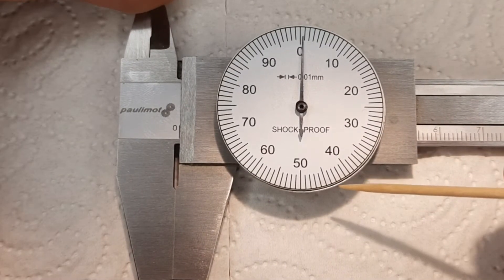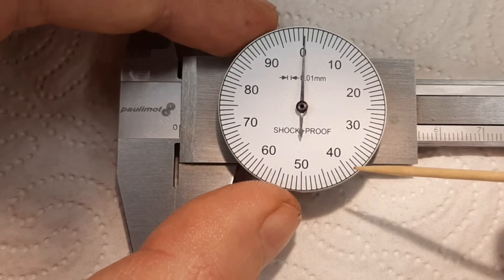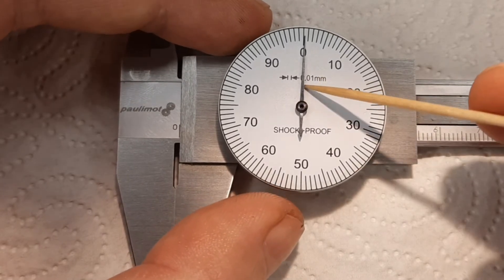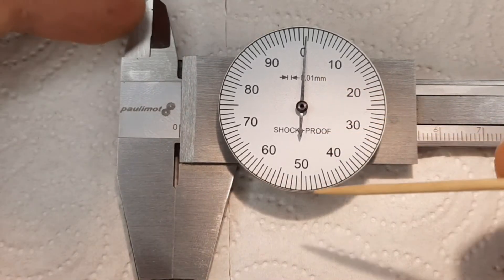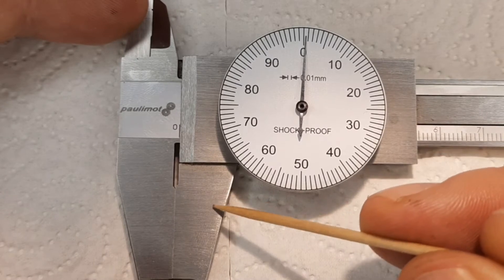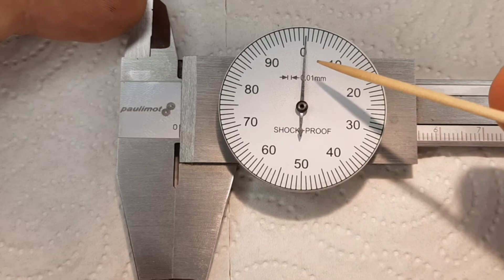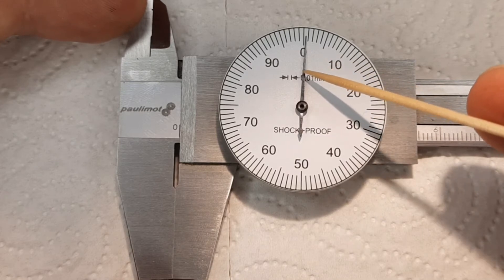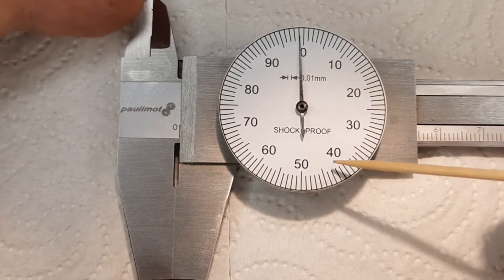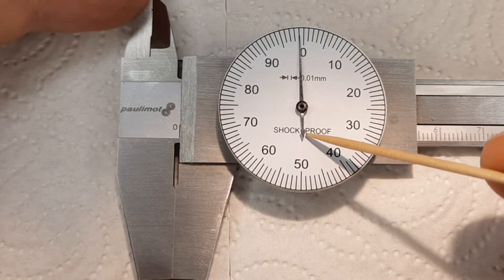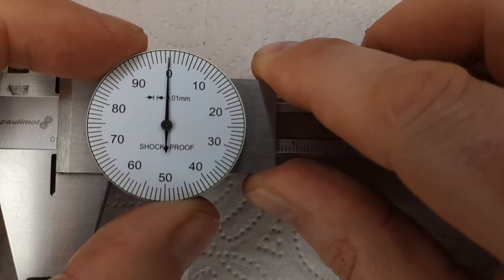The rest is easy. Just put everything together again. Squeeze the caliper together so you have it on zero, adjust the pointer as you like to straighten it up, and push it back on the little shaft there.